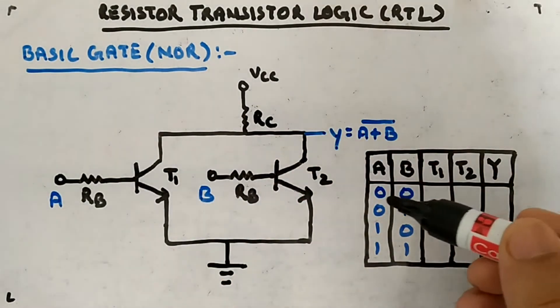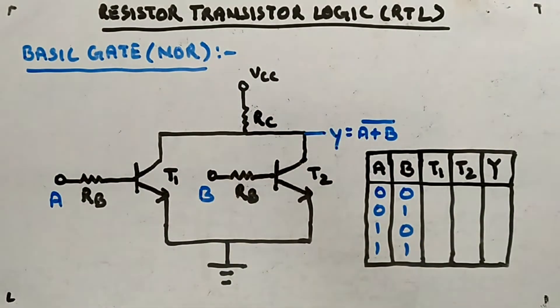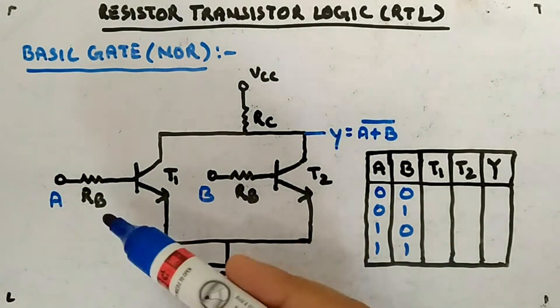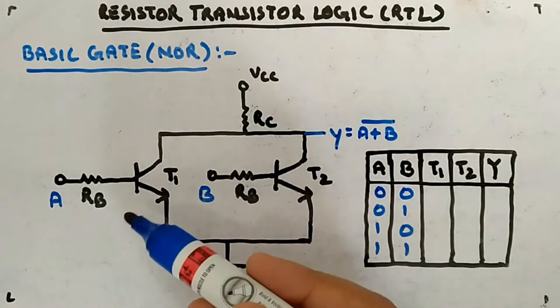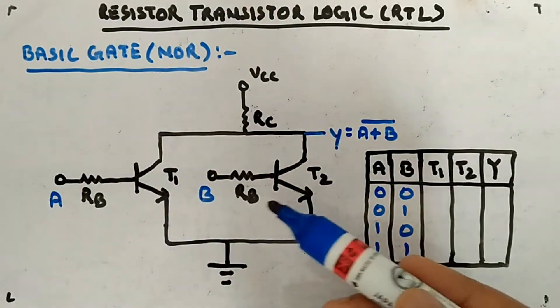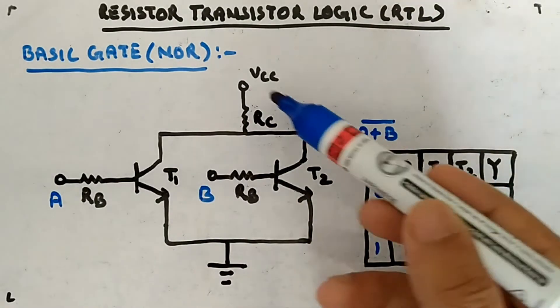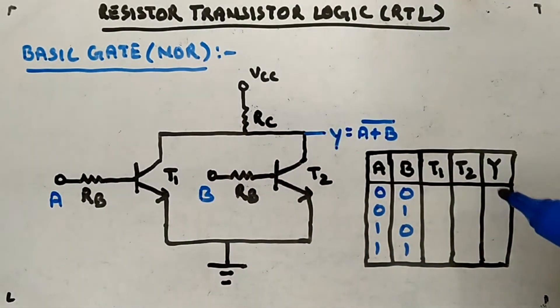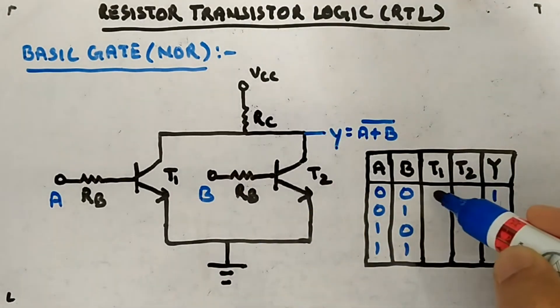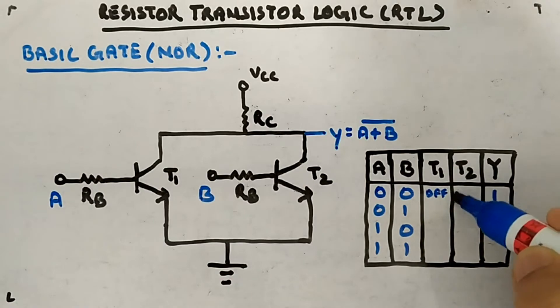If I apply zero-zero in both the inputs, what will happen to both the transistors? They will be in cutoff. Zero-zero means no currents will be passed in both transistors, hence no Ic. It is as good as off. So all the output will be Vcc, meaning high. The output will be one, and transistors will be off, off.